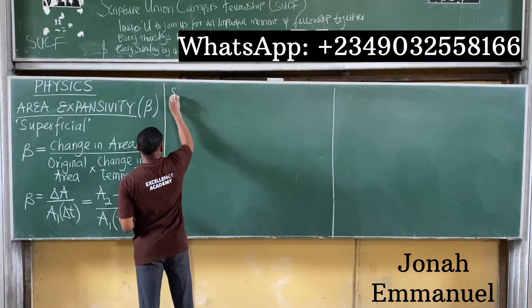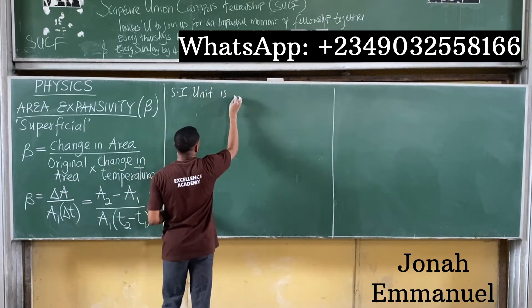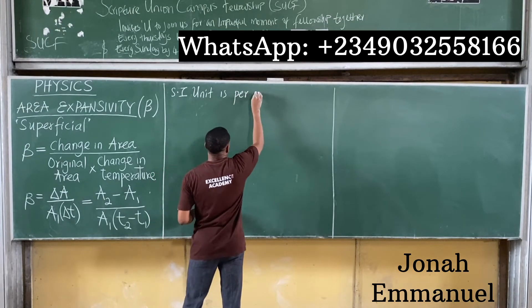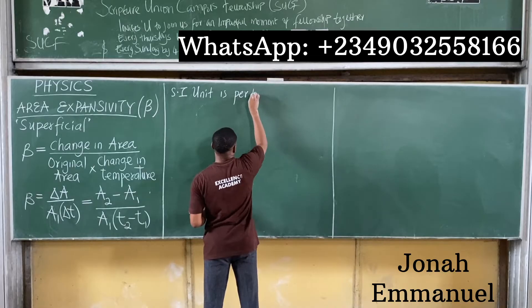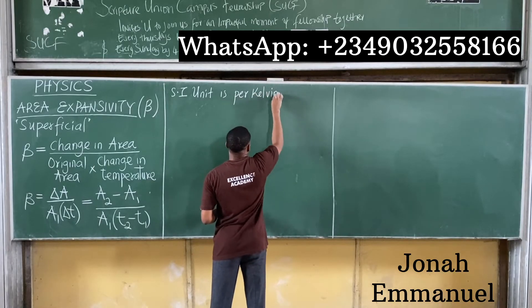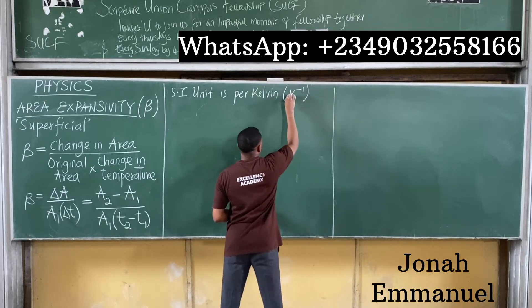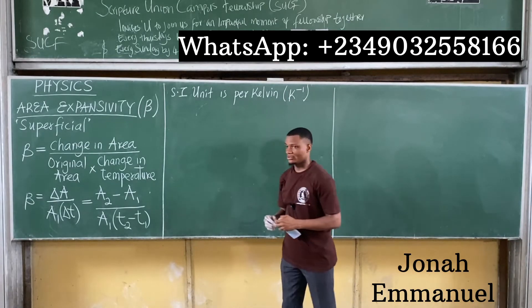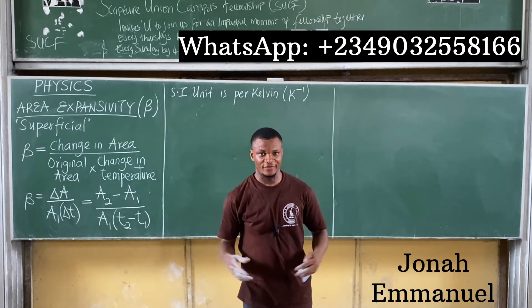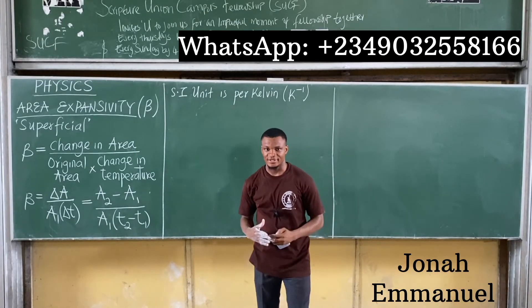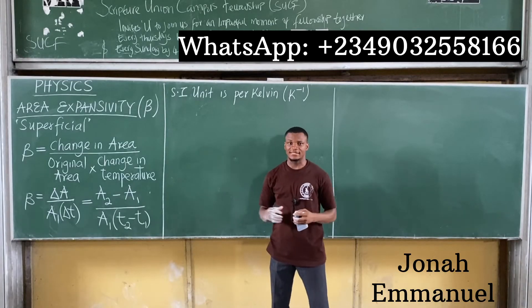The SI unit of area expansivity is per kelvin, written as K to the power of minus one. If you're using degrees Celsius the unit is per degree Celsius, but per kelvin is the standard SI unit.